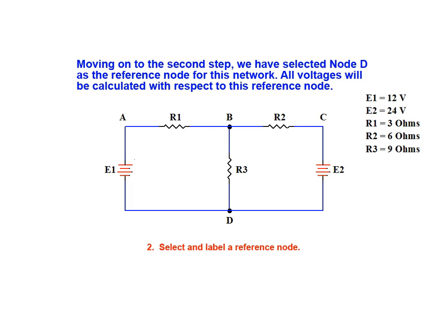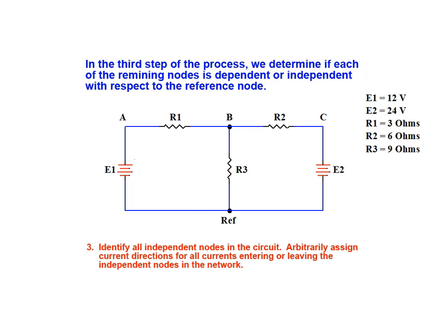Moving on to the second step, we have selected node D as the reference node for this network. All voltages in the network will be calculated with respect to this reference node. In the third step of the process, we determine if each of the remaining nodes is dependent or independent with respect to this chosen reference node.